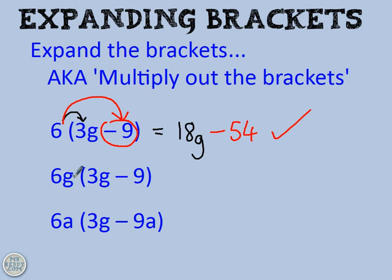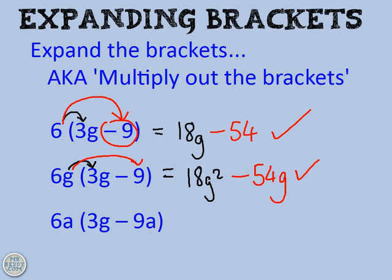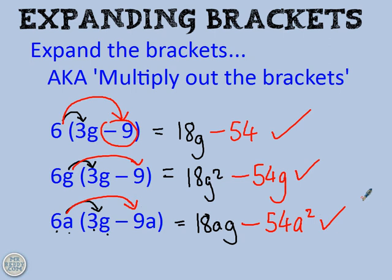Okay, let's apply the same process a bit more quickly to these next two examples. 6G times 3G gives you 18G squared, and then times it by the second term, and you get take away 54G. And then in the third one, 6A times 3G gives you 18AG, because we did 6 times 3, and then times A times G. And then do 6A times take away 9A, which gives you take away 54A squared. Done.